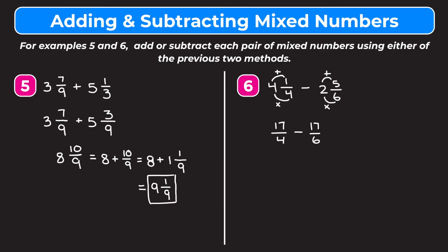Now we need to turn these improper fractions into two fractions with the same denominator. We have to find the least common multiple of 4 and 6, which is 12. So we need to turn each fraction into a fraction with a denominator of 12. To get from 4 to 12, we multiply by 3. To keep our fraction equivalent, we have to multiply the numerator by 3. 17 times 3 is 51. So 17 fourths is equivalent to 51 twelfths. Now for 17 sixths, 6 times 2 is 12, so we multiply our numerator of 17 by 2. And 17 times 2 is 34.